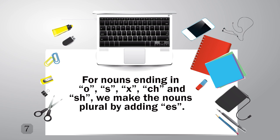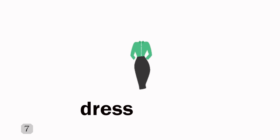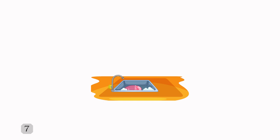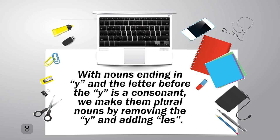For nouns ending in O, S, X, CH, and SH, we make the nouns plural by adding ES. Zero → Zeros. Dress → Dresses. Box → Boxes. Bench → Benches. Dish → Dishes.